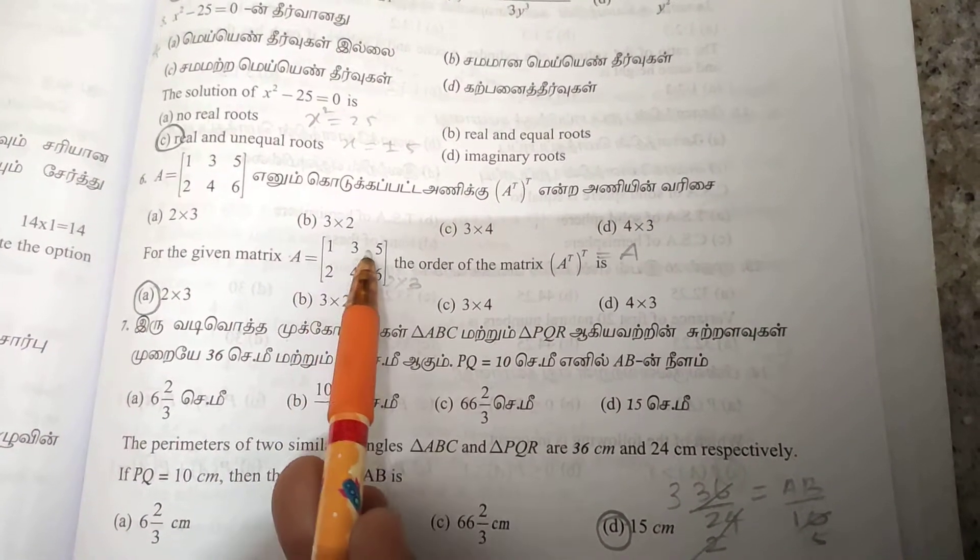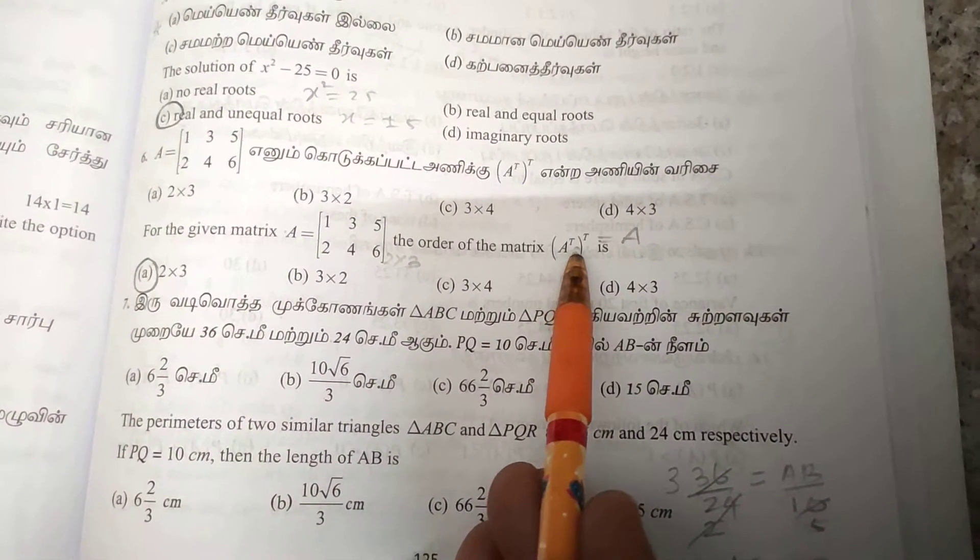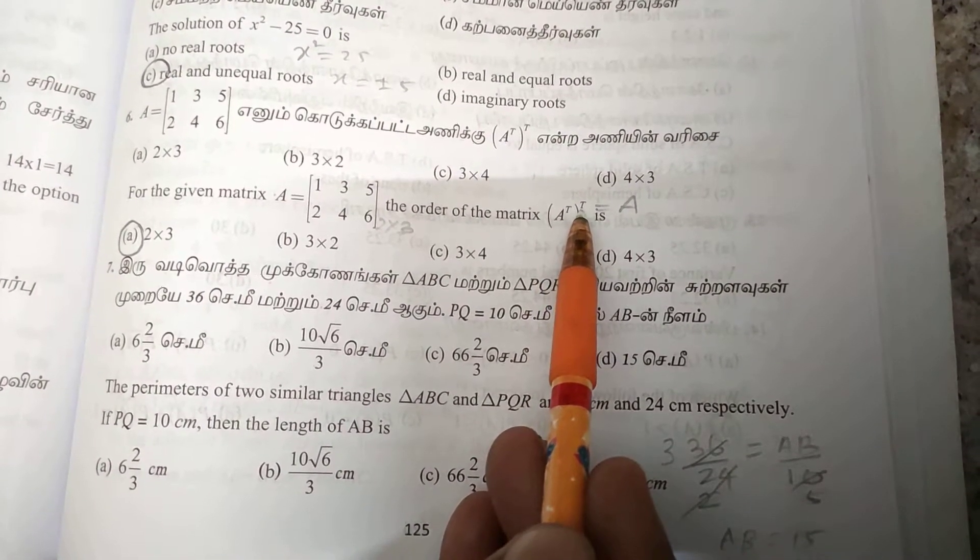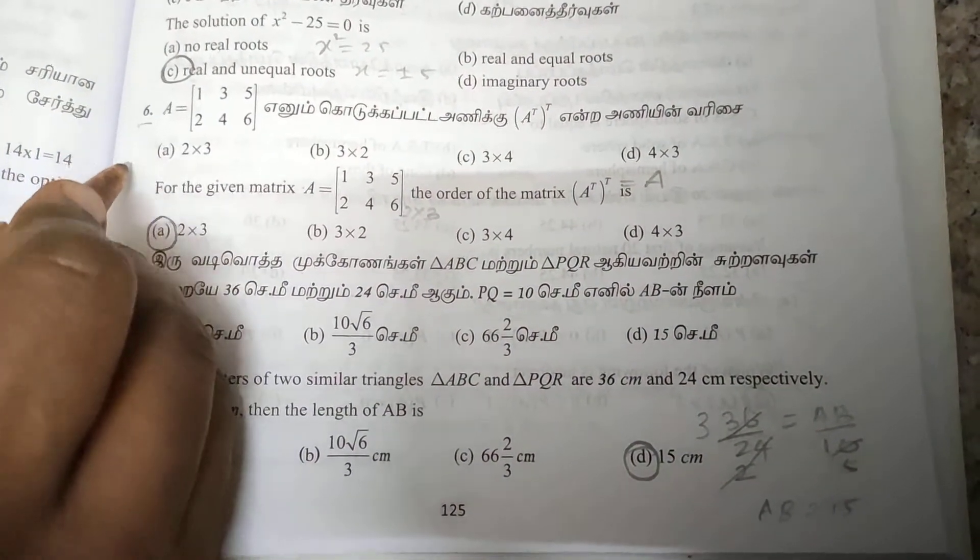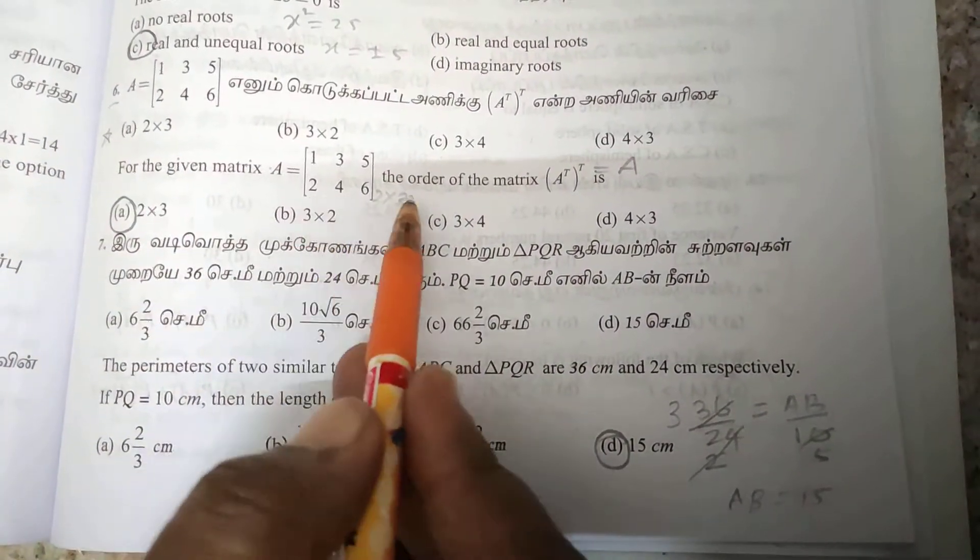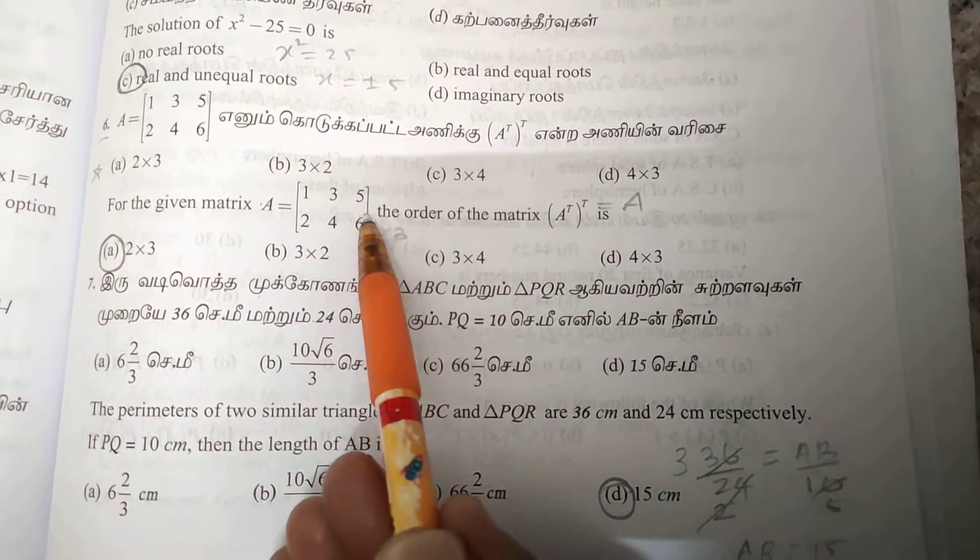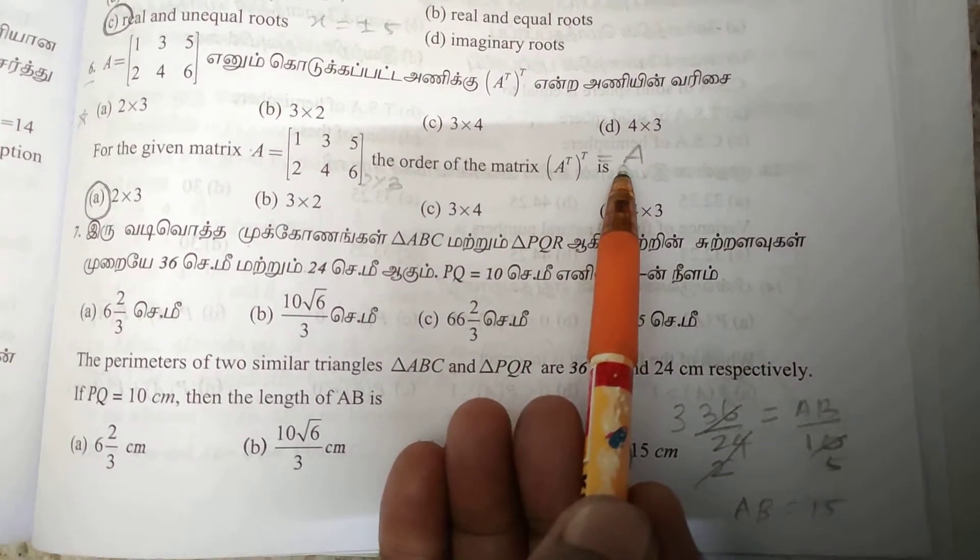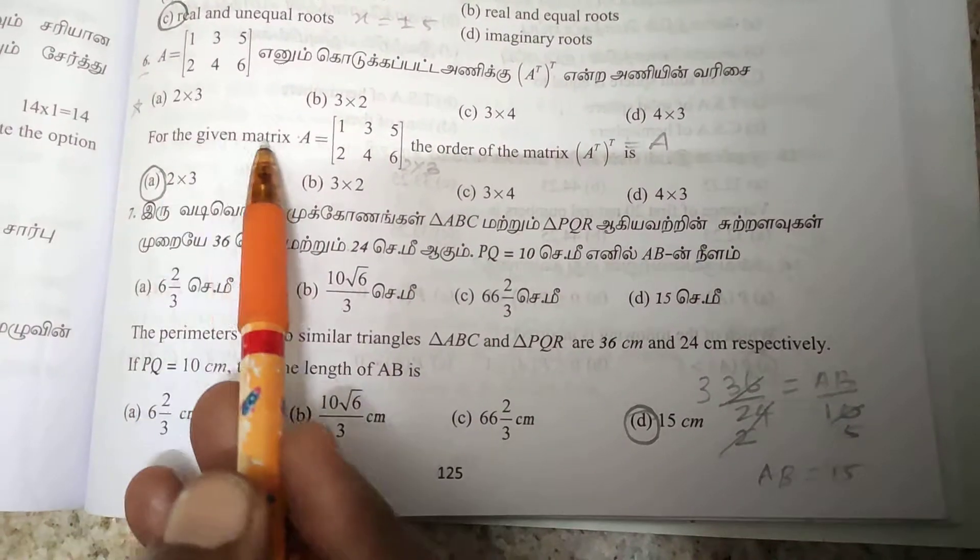Sixth one is about order of matrices. With 2 rows and 3 columns, the order is 2×3. For the transpose of A transpose, we need to find A transpose first. A transpose has order 3×2, so (Aᵀ)ᵀ equals A, which has order 2×3. Read the question carefully.